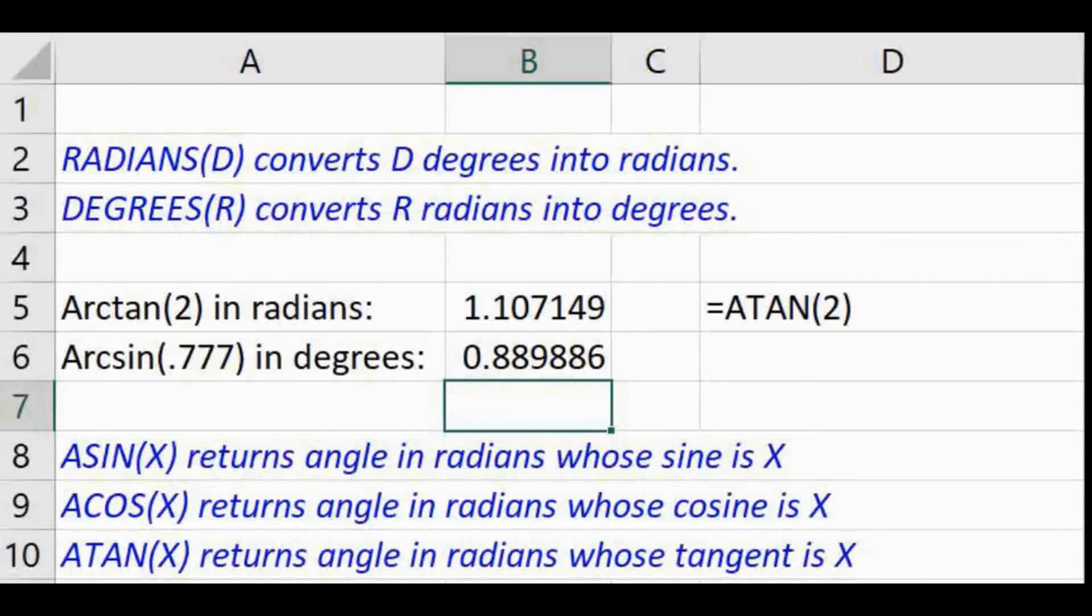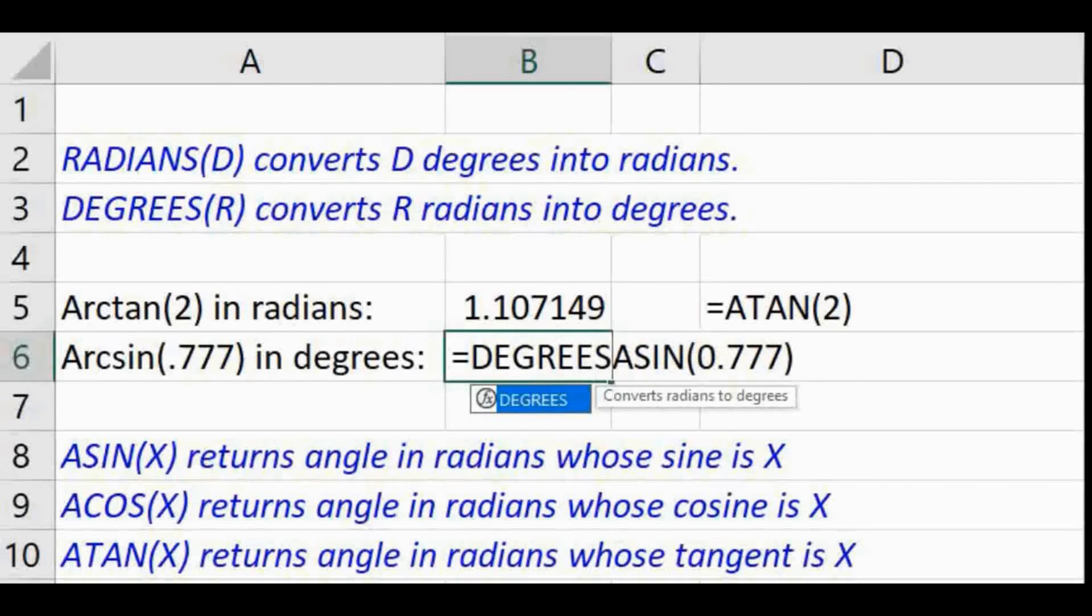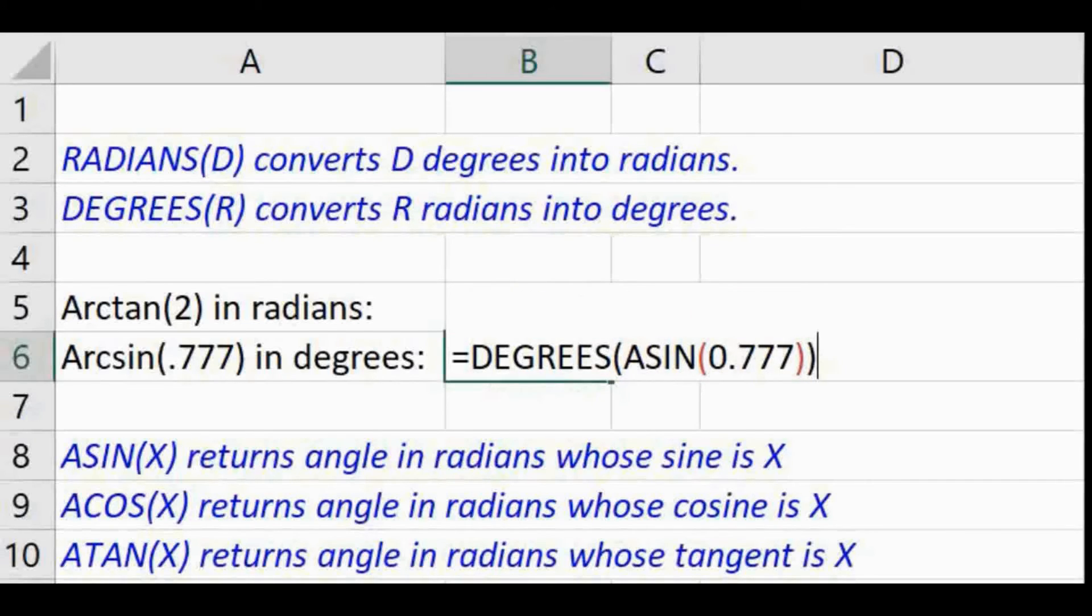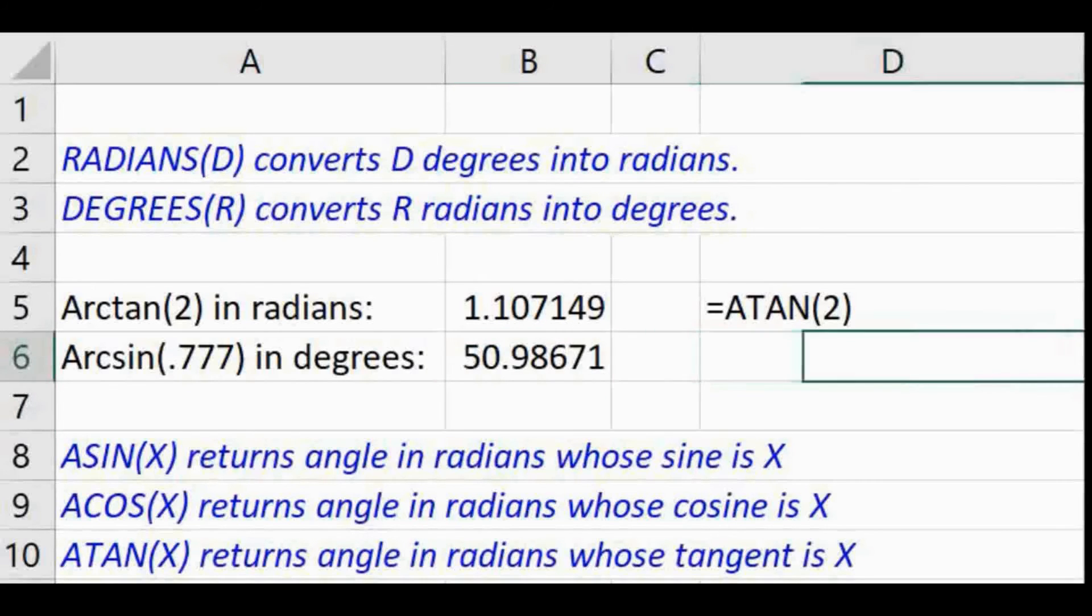Well, that's not the 51 degrees the calculators gave us, but Excel deals with radians by default. To convert to degrees, Excel provides a function named DEGREES, which will take a radian measure as its argument. So if we wrap the arcsine expression in the DEGREES function, we'll get the 51 degree angle we expect.